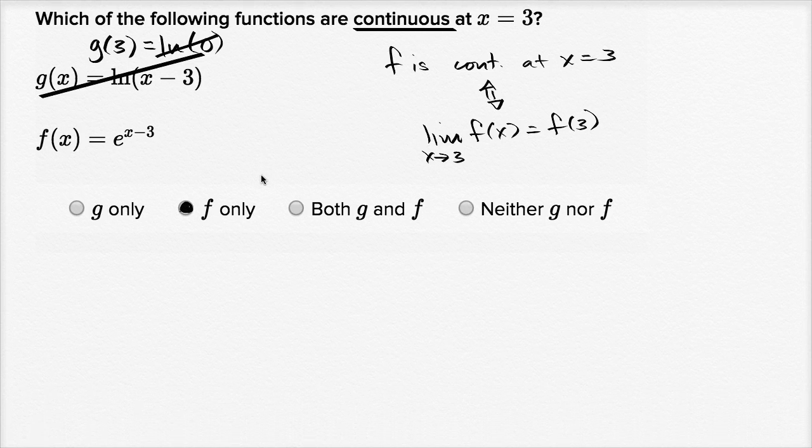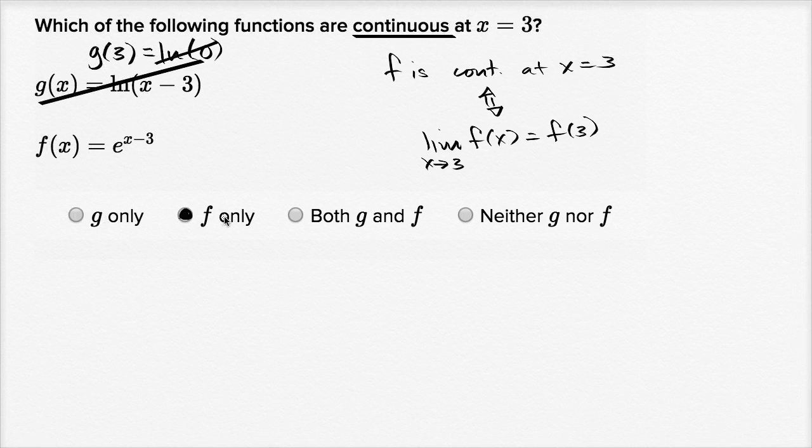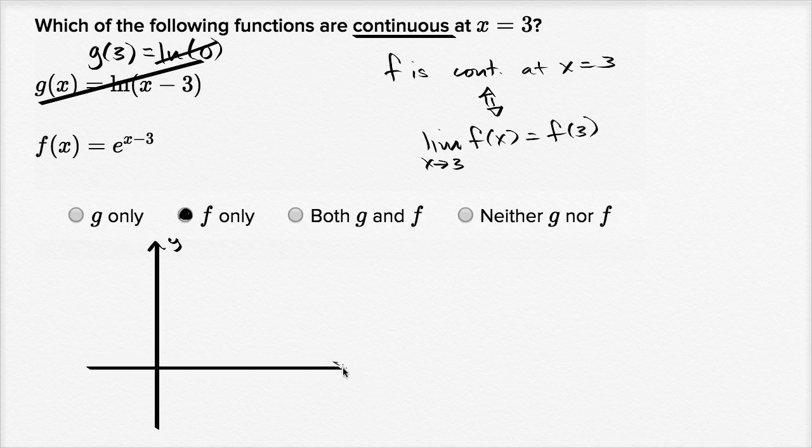And once again, it's good to think about what's going on here visually. Both of these are shifted over versions—this is a shifted over version of ln of x, this is a shifted over version of e to the x. And so if we like, we could draw ourselves some axes. So that's our y-axis, this is our x-axis.